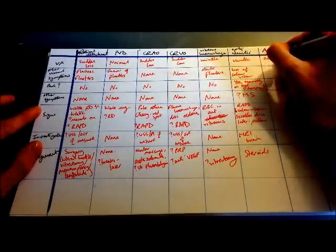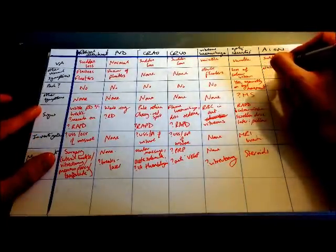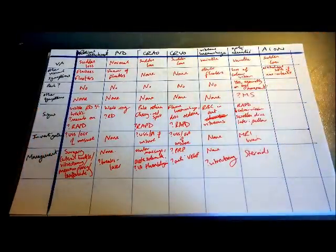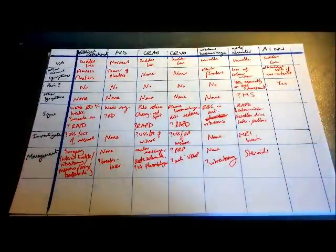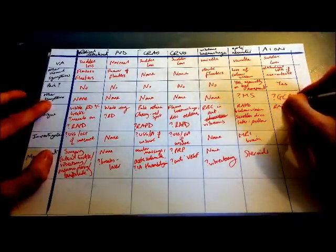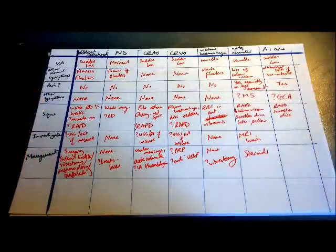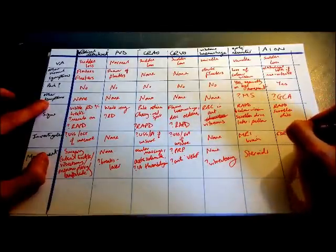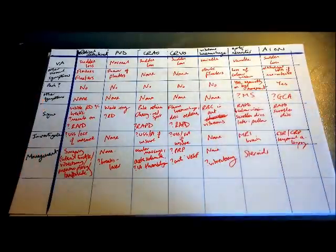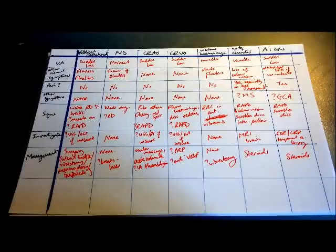Finally, anterior ischemic optic neuropathy — remember it's either arteritic or non-arteritic. Sudden loss of vision. For other visual symptoms: if it's non-arteritic, you might get an altitudinal visual field defect, but not in arteritic. There is pain associated with it. For other symptoms, really want to exclude giant cell arteritis — so jaw claudication, headache, and so on. Signs are similar to optic neuritis: a relative afferent pupillary defect and a swollen optic disc. For investigations, look at inflammatory markers for any hint of giant cell arteritis — ESR, CRP and platelets, which will be raised — and if we think it is, do a temporal artery biopsy. Management: steroids in arteritic, and aspirin in non-arteritic.